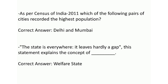As per census of India 2011, which of the following pairs of cities recorded the highest population? Correct answer is Delhi and Mumbai. 'The state is everywhere; it leaves hardly a gap.' This statement explains the concept of — correct answer: welfare state.